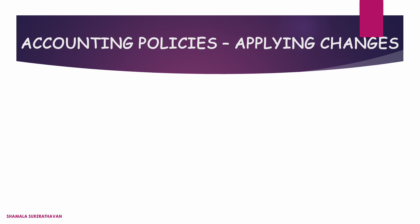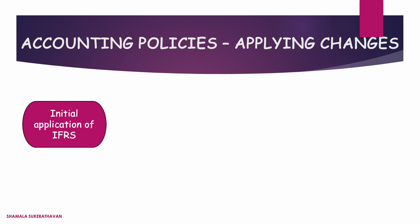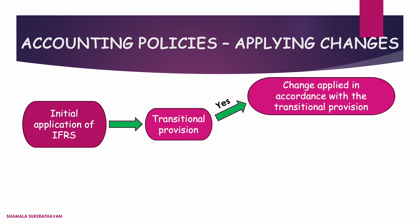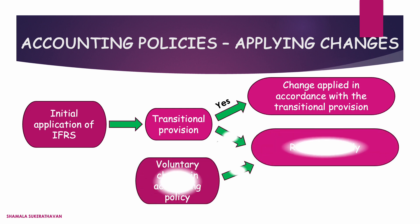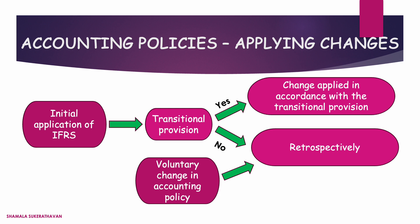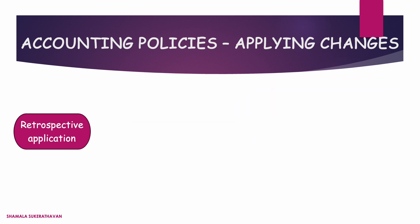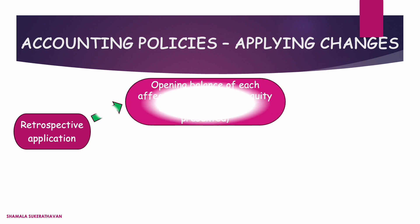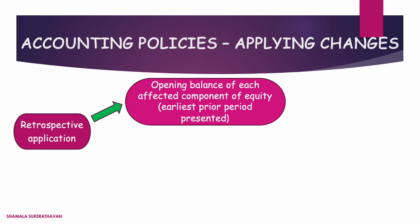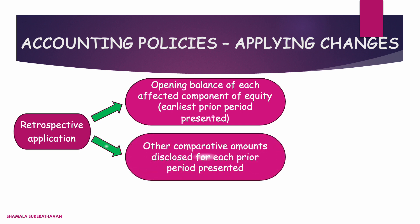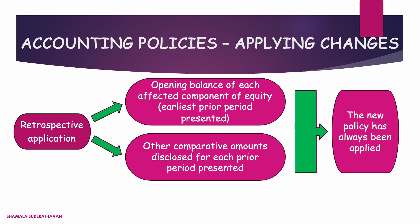An entity shall account for a change in accounting policy resulting from initial application of an IFRS in accordance with specific transitional provisions, if any, in that IFRS. However, in the absence of specific transitional provisions on initial application of an IFRS, or if an entity changes its accounting policy voluntarily, it shall apply the change retrospectively. In such cases, the entity shall adjust the opening balance of each affected component of equity for the earliest prior period presented, and other comparative amounts disclosed for each prior period presented, as if the new accounting policy has always been applied.